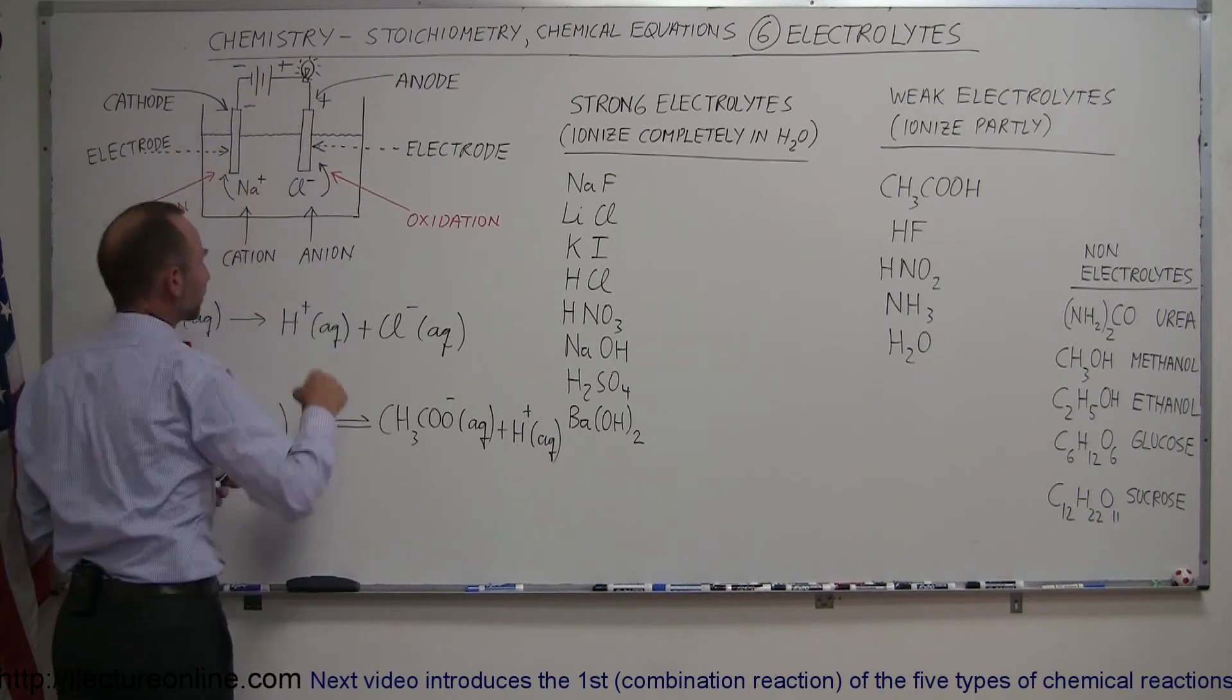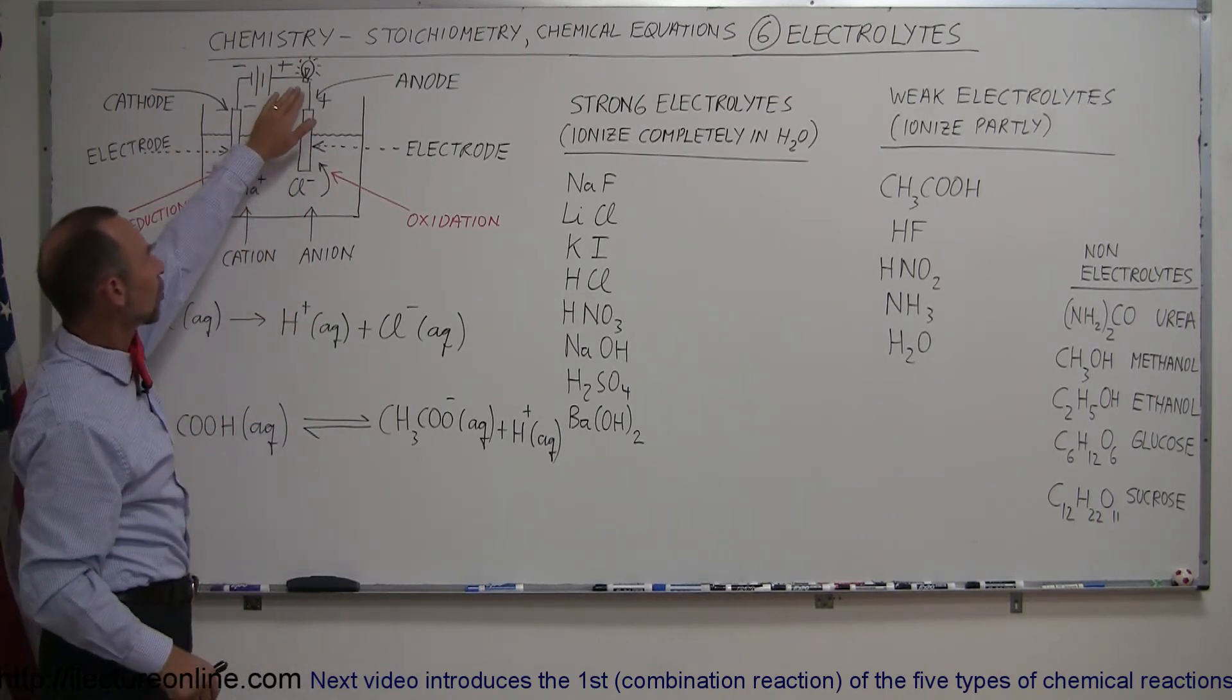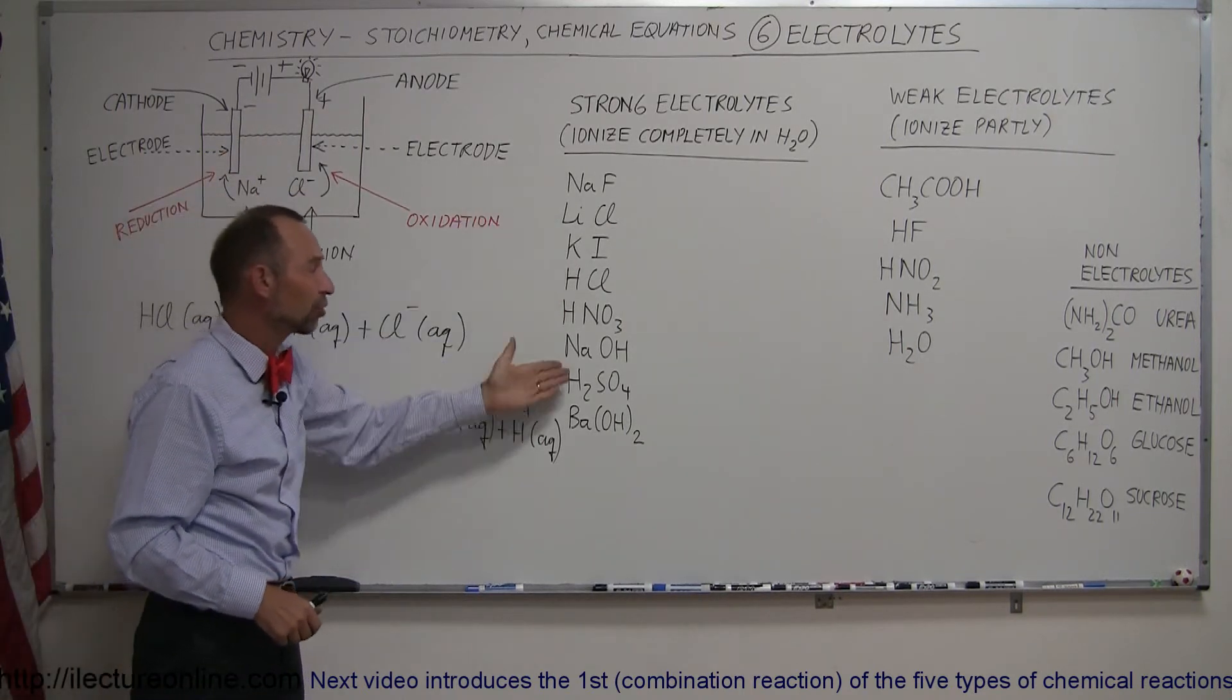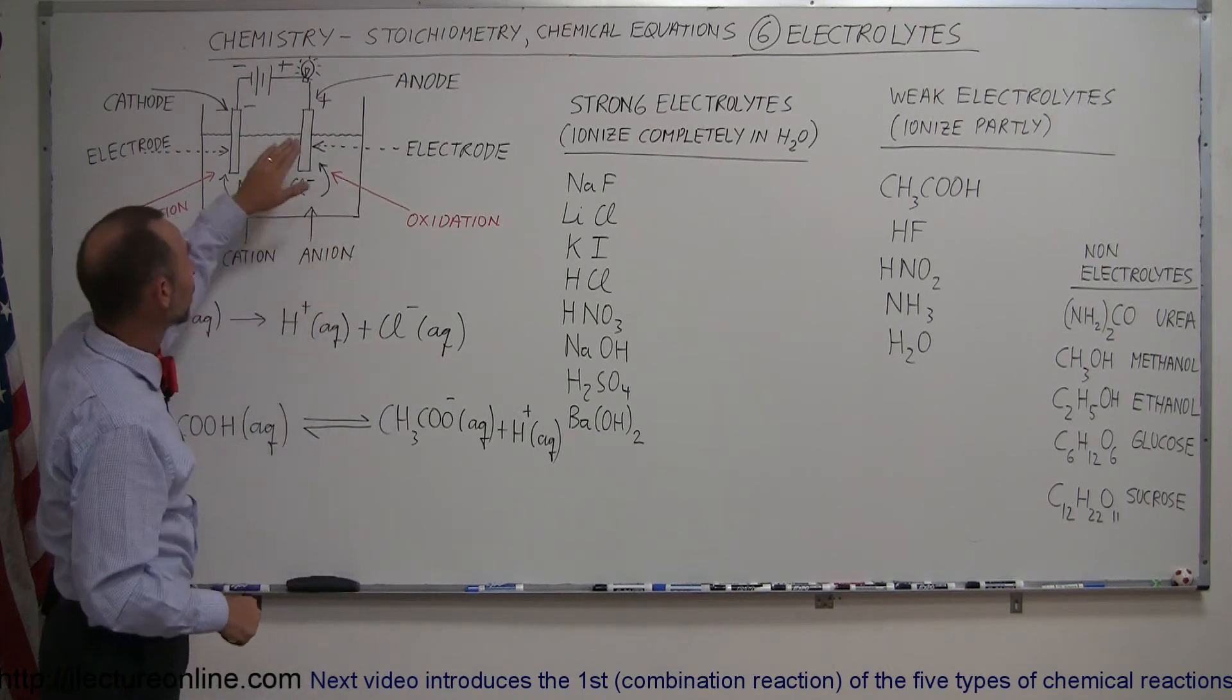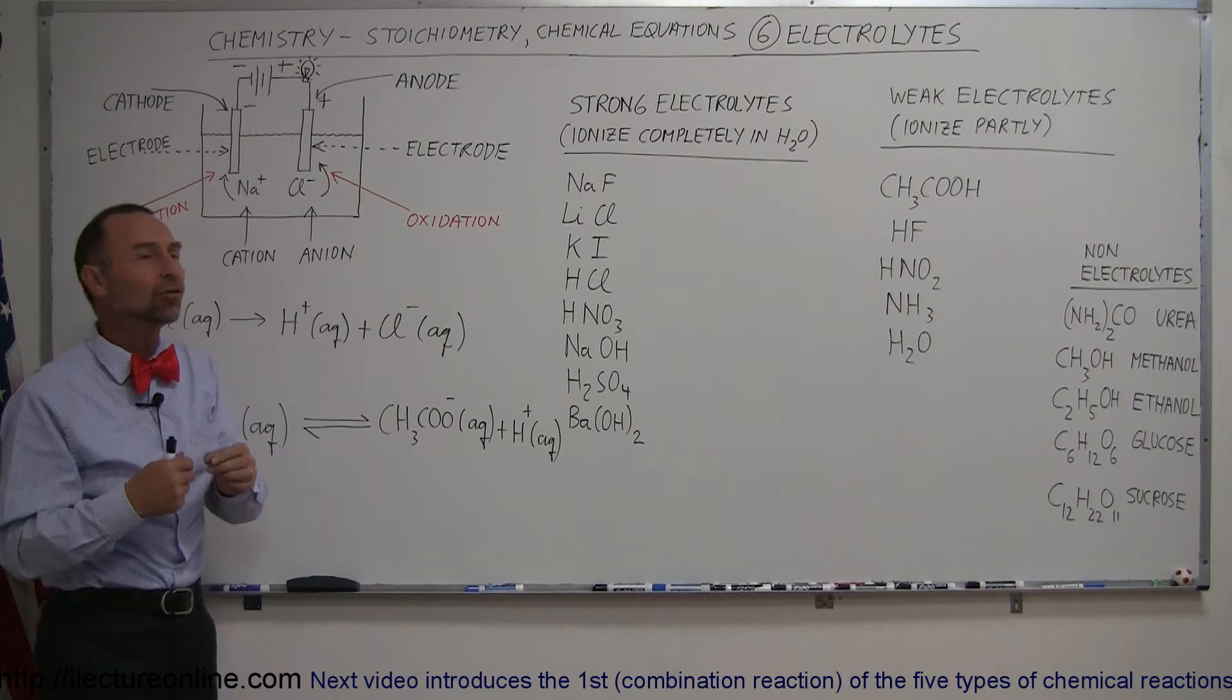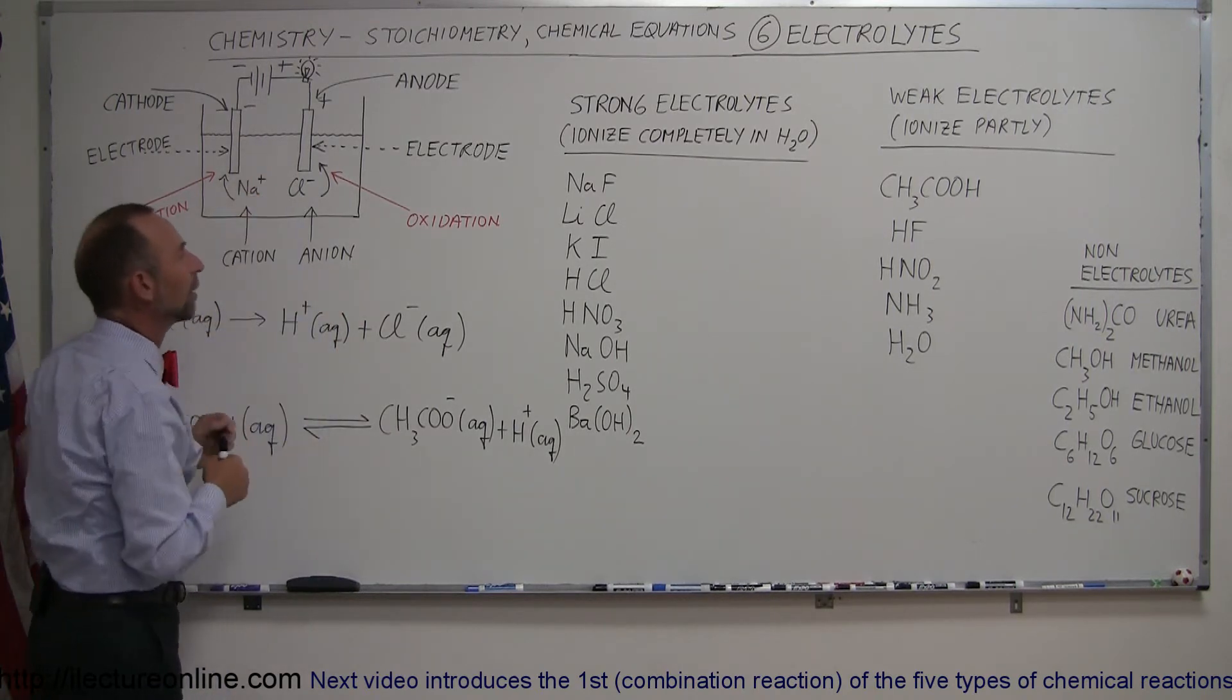If the light bulb goes on strongly, then there's a strong current, which means there's a lot of ions in the fluid, and therefore that must have come from a strong electrolyte. If the light bulb is just dimly lit, then whatever we put in there doesn't completely dissociate in the liquid, and we don't have as many ions.